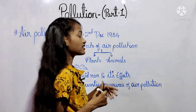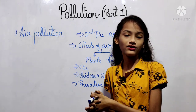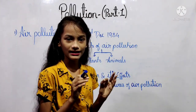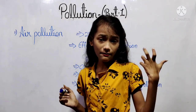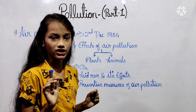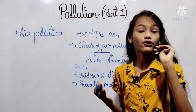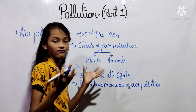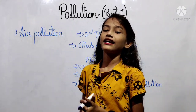Now we will see the effects of air pollution on plants and animals. On plants: first, stomata get closed; second, the rate of photosynthesis slows down; third, growth is retarded and leaves fall off or become yellow.